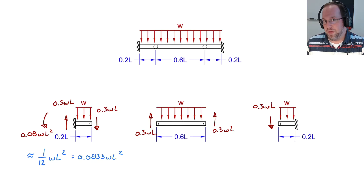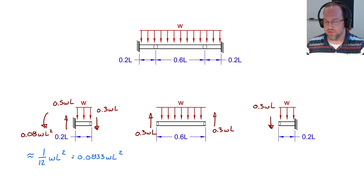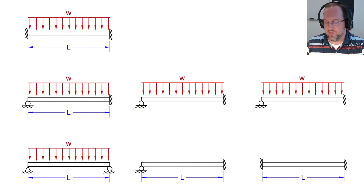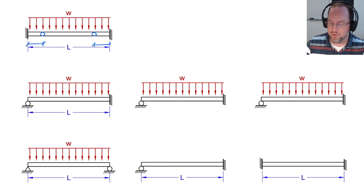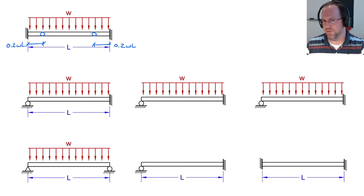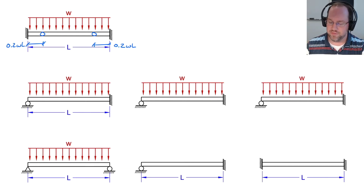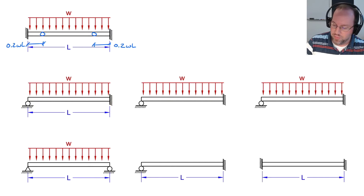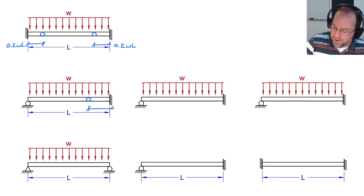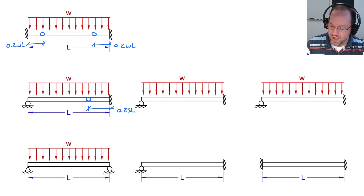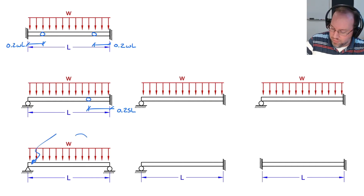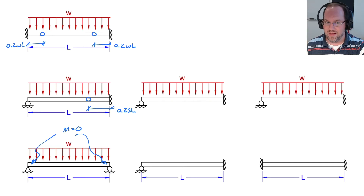This process can be repeated for any system. We'll first look at some canonical systems to get a feel for where to place inflection points. For a fixed-fixed beam with distributed load, the inflection points are at about 0.2L from each end (more precisely 0.21L, but close enough). For a fixed-pinned case, there is one inflection point at the quarter span, 0.25L. For a pin-pin case, there are no interior inflection points since moment is already zero at both ends.